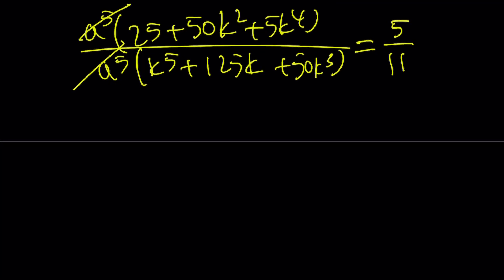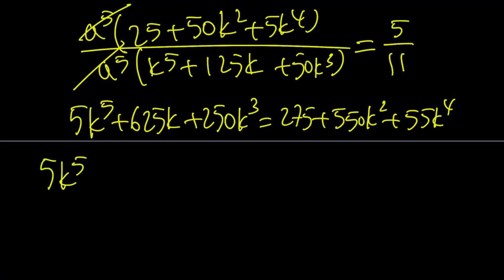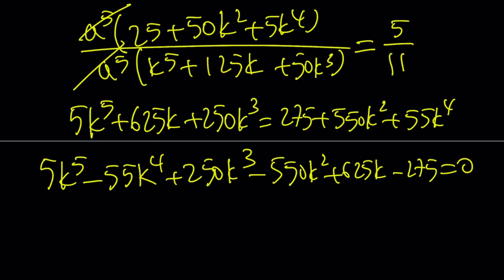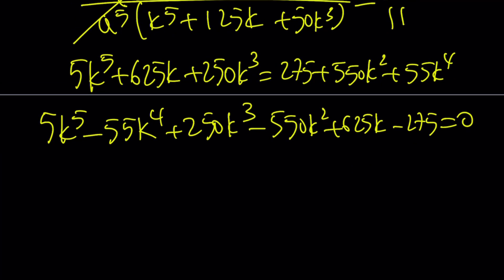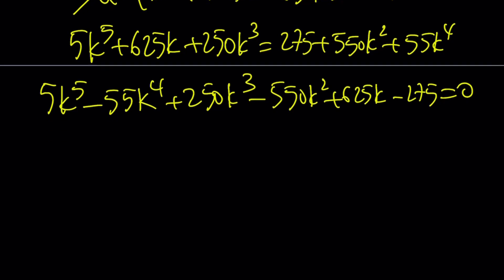If you're still here, we're going to solve another quintic, but this time it's a good one. Notice that the sum of the coefficients is 0: 5 − 55 + 250 − 550 + 625 − 275 = 0. This means k = 1 is a root.